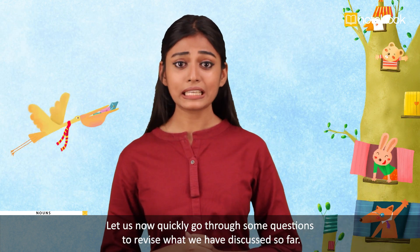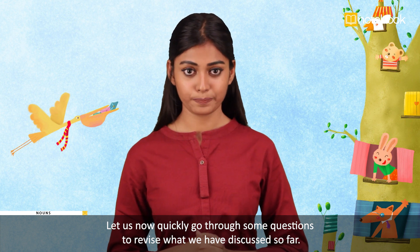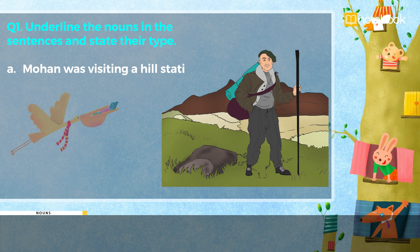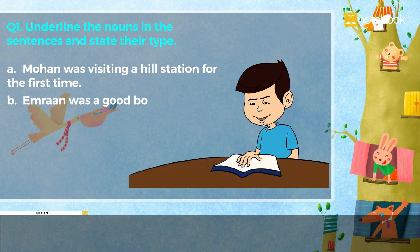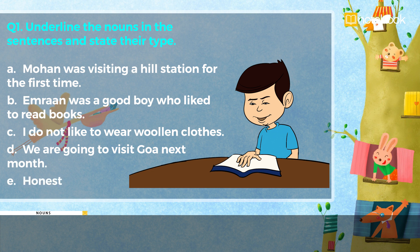Let us now quickly go through some questions to revise what we have discussed so far. Question: Underline the nouns in the sentences and state their type. A. Mohan was visiting a hill station for the first time. B. Imran was a good boy who liked to read books. C. I do not like to wear woolen clothes. D. We are going to visit Goa next month. E. Honesty is the best policy.